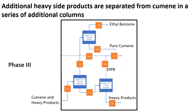Cumene and heavy products then reach Phase 3 of our process, where the final purification of cumene happens. Ethyl benzene and cumene are separated out from heavier components in the cumene separator. They are then sent to a final distillation column that separates the pure cumene from ethyl benzene. Heavy components are sent to a DIPB recycler which removes heavies like O-terphenyl and N-hexyl naphthalene. DIPB is recycled and sent back to the transalkylation reactor.